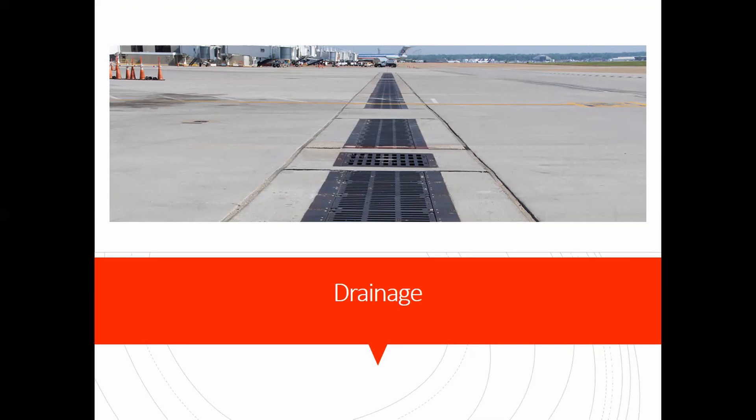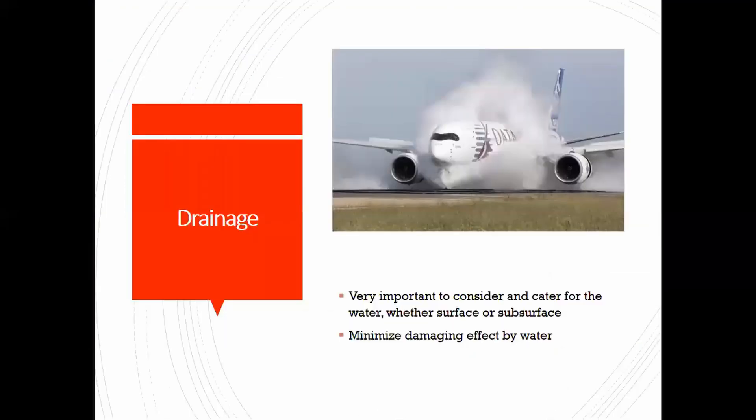You can't have a lot of water lying on the pavement — you can see why that might be very dangerous for landing. It is very important to consider and cater for water, whether surface or subsurface, and to minimize damaging effects from water. There are a couple of drainage systems: surface drainage and subsurface drainage, each split into different sections in your book. That's it for today — I hope you understand airfields a little better and want to design or work on one someday. It's certainly one of my dreams.